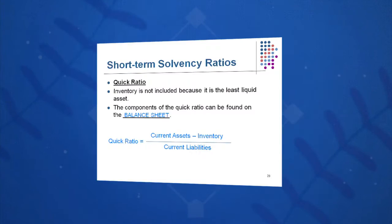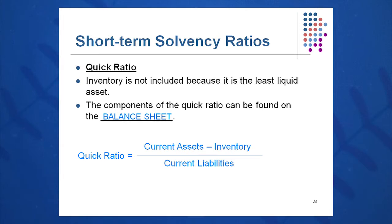Another important ratio to memorize for life — especially if your company carries a lot of inventory — is the quick ratio. We subtract out inventory because it's not very liquid. So we take current assets minus the inventory amount from the balance sheet, and divide by current liabilities to get the quick ratio. All components come from the balance sheet.